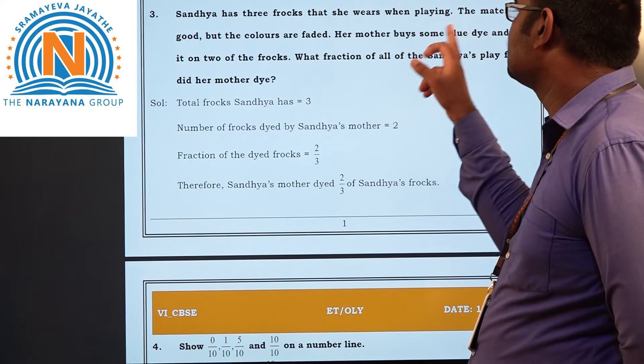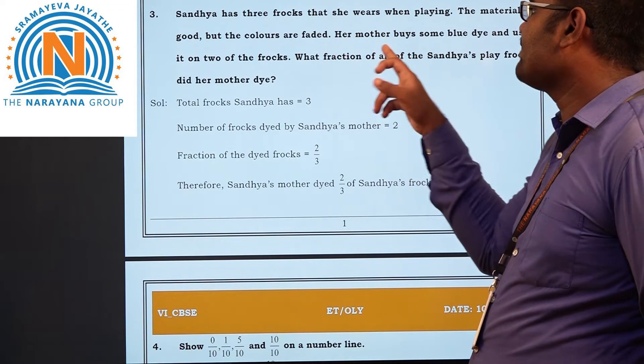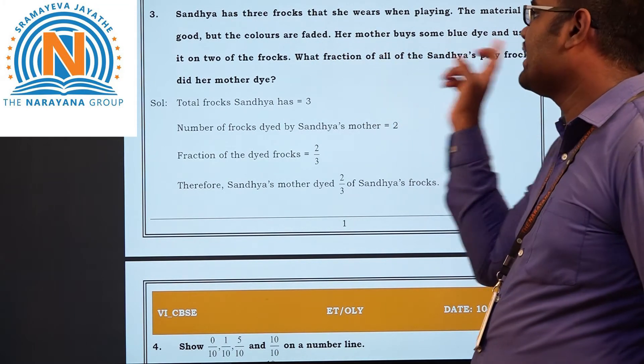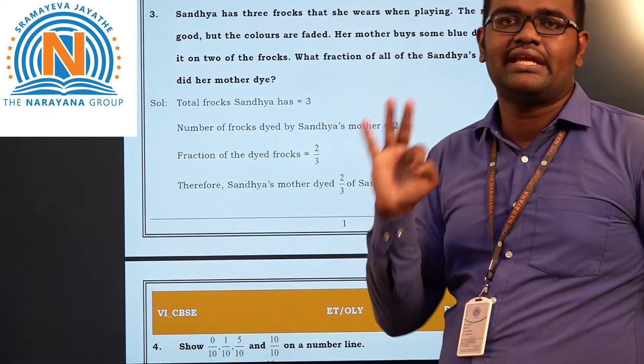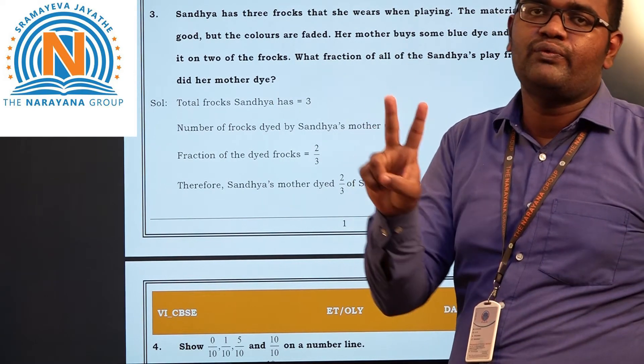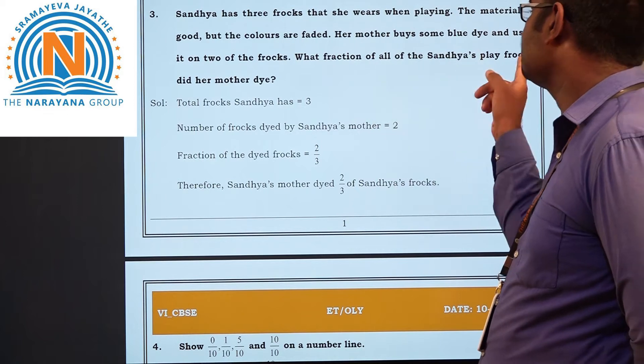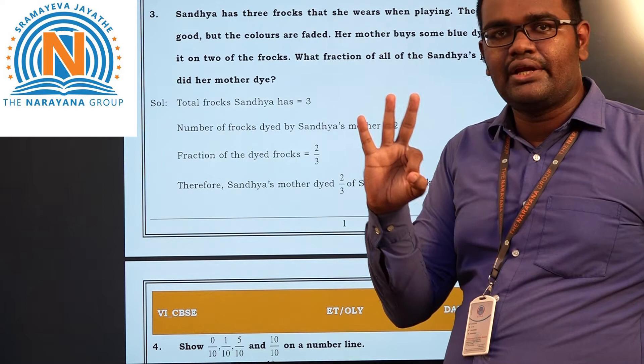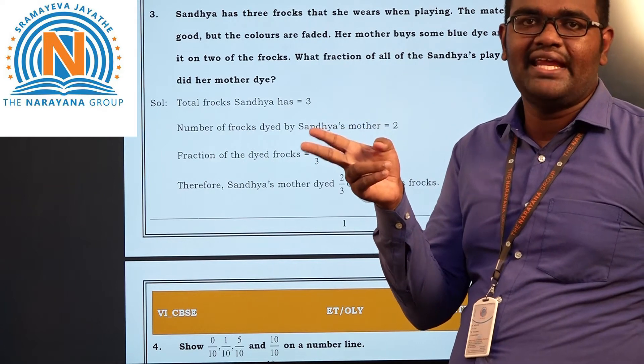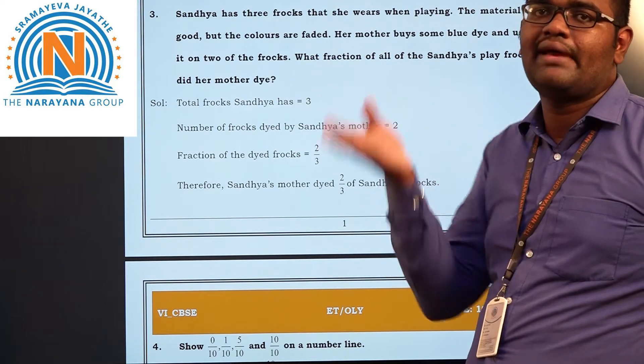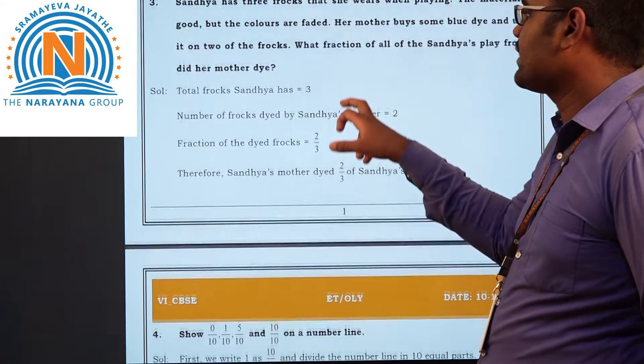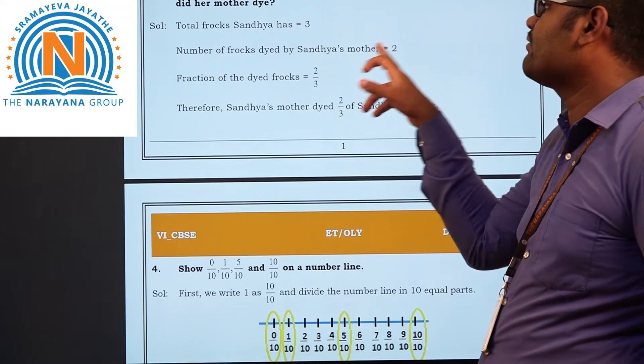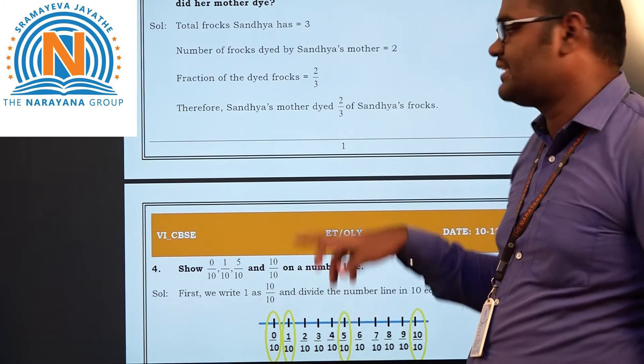Sandhya has 3 frogs. The material is good but the color faded. Her mother buys some blue dye and uses it on 2 frogs. What fraction of Sandhya's frogs did the mother dye? 3 frogs are there, 2 frogs are applying dye, so the fraction is 2 by 3. Total frogs is 3, number of frogs mother is dyeing is 2. The fraction is 2 by 3.